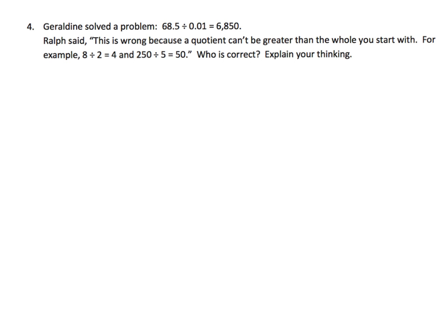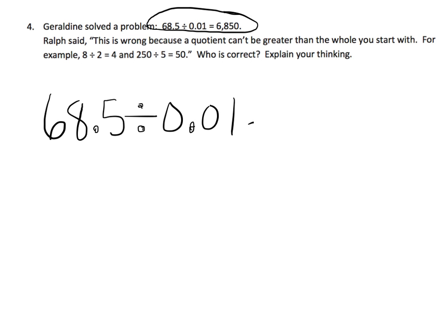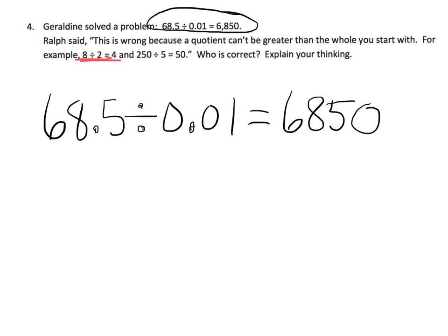Our last problem: Geraldine solved 68.5 divided by one-hundredth and got six thousand eight hundred fifty. Ralph says this has to be wrong because your answer cannot be greater than what you started with. We started with sixty-eight and ended up with six thousand eight hundred. He argues that division always makes the answer smaller, and shows examples: start with 8, end with 4; start with 250, end with 50.